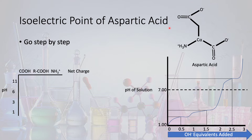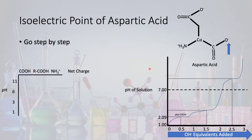We're going to use aspartic acid as our example. Aspartic acid has our quaternary amine, just like our previous example of glycine, and our carboxylic acid, again just like glycine. But the R group on aspartic acid is a carboxylic acid with an additional hydrogen that can be donated to solution. We're going to go through this the same way we went through glycine.